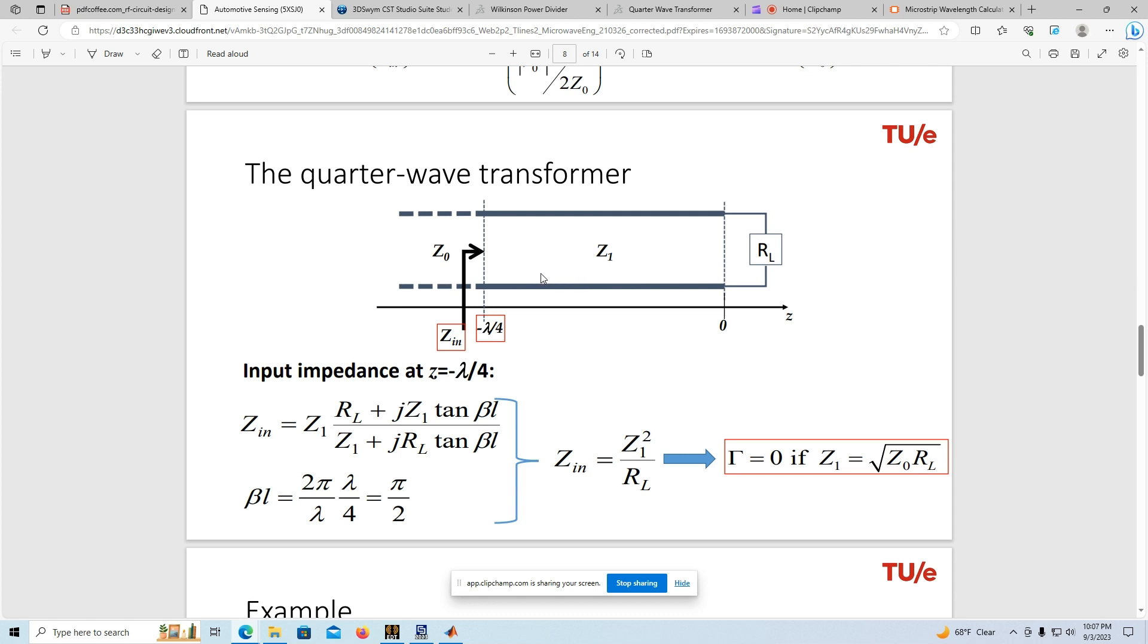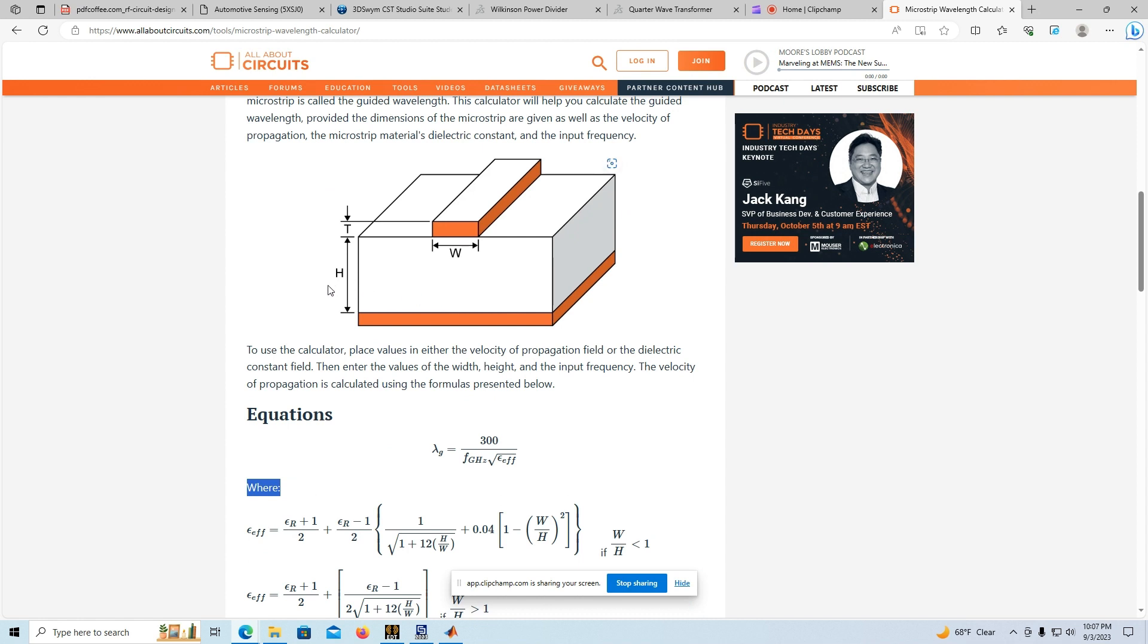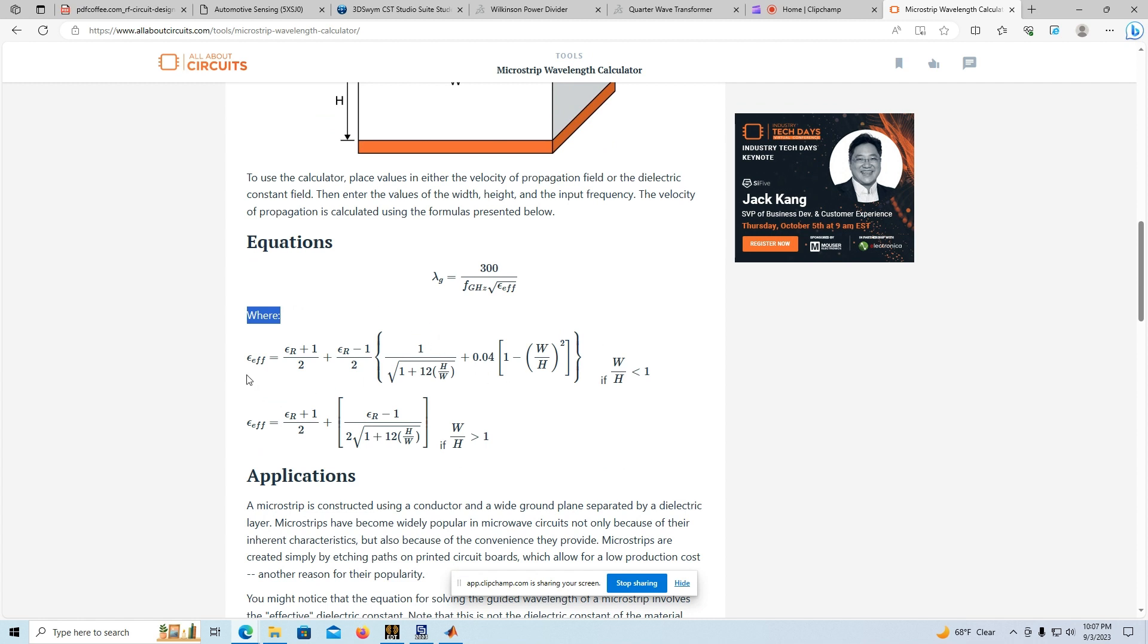Now, with microstrip, to calculate lambda over 4, you need to accommodate the epsilon R of the dielectric, and from there and the geometry, H which is the height of the dielectric, and W the width of the conductor, you can calculate epsilon effective. This permittivity is then put into the formula for the lambda, and it is essentially the lambda of free space divided by the square root of epsilon effective.